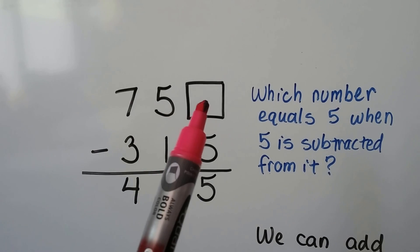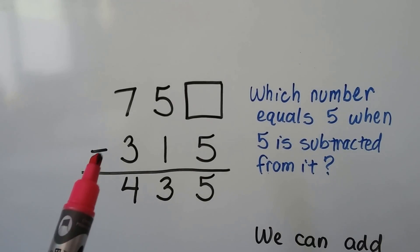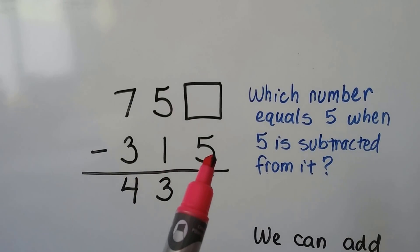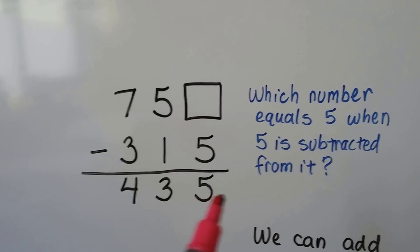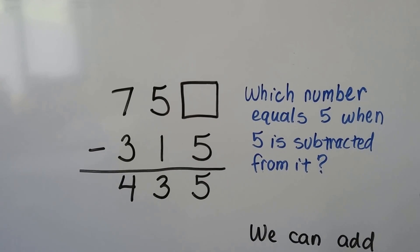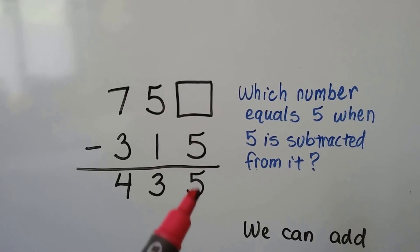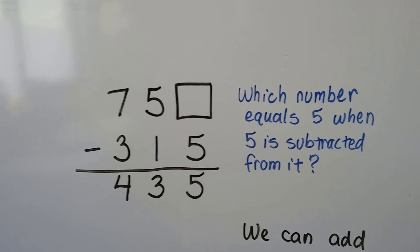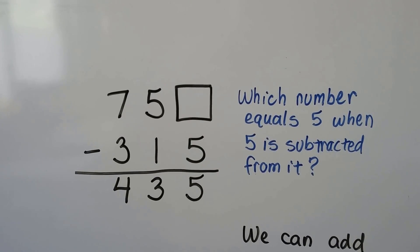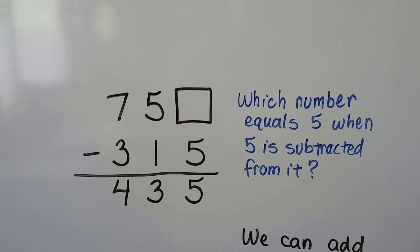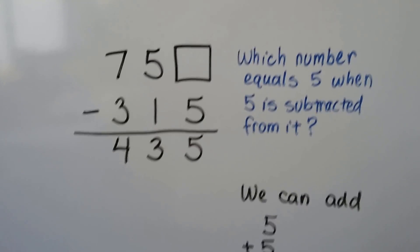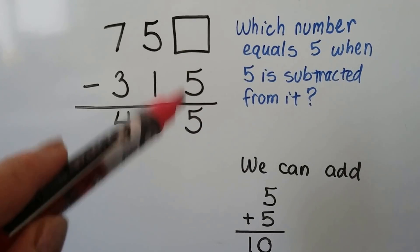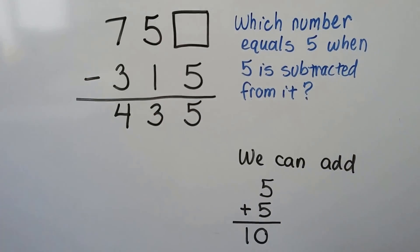Now we have 750 something and we're subtracting 315. They gave us the answer. We need to figure out which number equals a 5 when 5 is subtracted from it. What number would equal a 5 if you took 5 away from it?